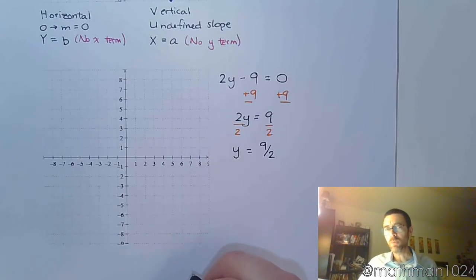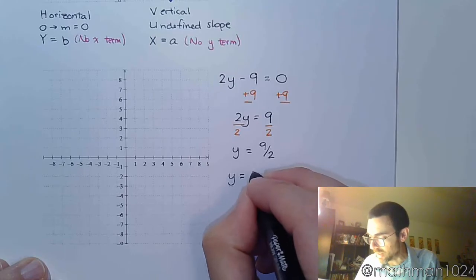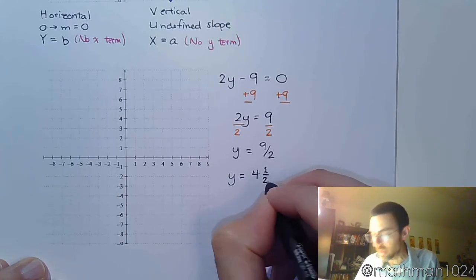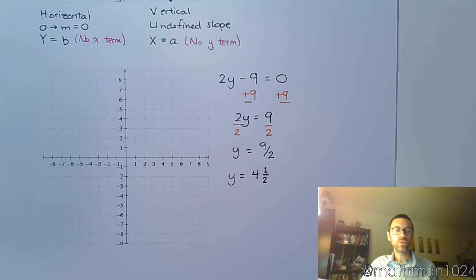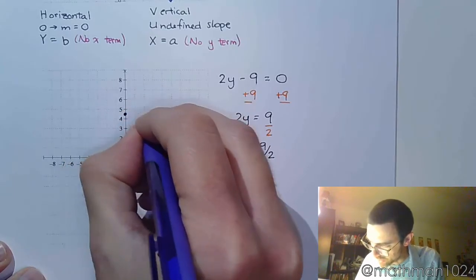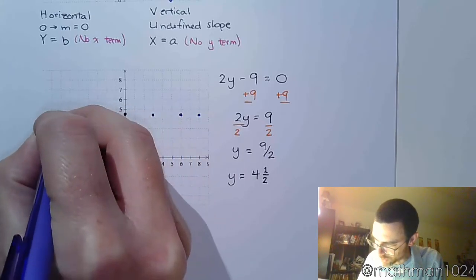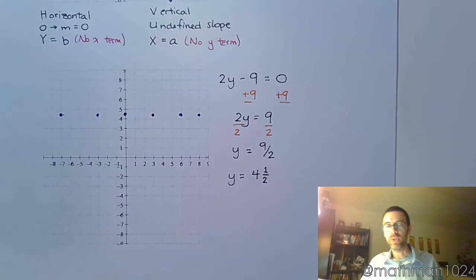Now, when we graph this, it might make more sense for you to read this as a mixed number. 9 halves is 4 and a half. Don't look at this as a slope. Don't say, oh, I'm going to go up 9 over 2. No, because this isn't 9 halves x. This is just 9 halves. So that means we're looking at a horizontal line where every y coordinate is 4 and a half. So you can start here at 4 and a half, and no matter where you go, you keep this at 4 and a half all the way left, all the way right. And that's going to be your horizontal line.